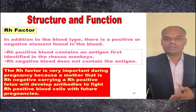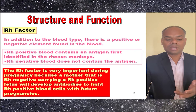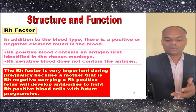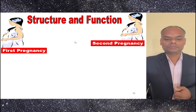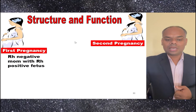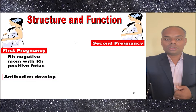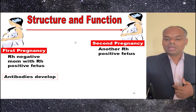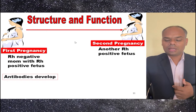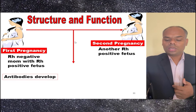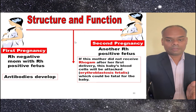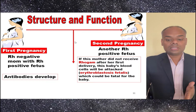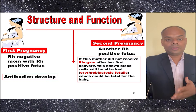The RH factor is very important during pregnancy because a mother who is RH negative carrying an RH positive fetus will develop antibodies to fight RH positive blood cells in future pregnancies. In the first pregnancy, an RH negative mom with an RH positive fetus can develop antibodies. In a second pregnancy with another RH positive fetus, if the mother did not receive RhoGAM after her first delivery, the baby's blood cells will be attacked, causing a disease known as Erythroblastosis fetalis, which could be fatal for the newborn baby.